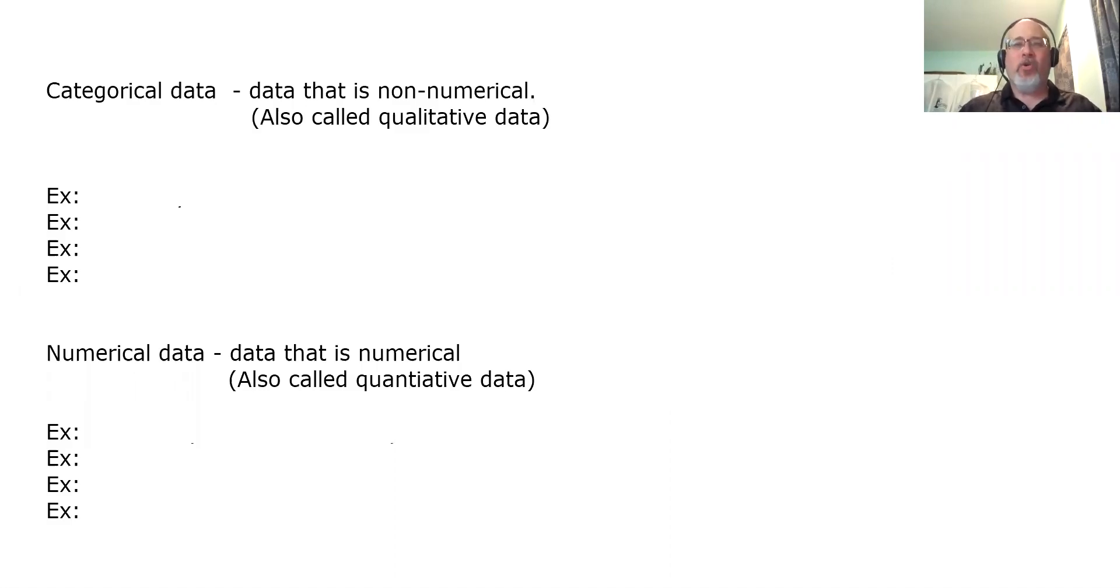The first type is called Categorical Data. Categorical data is simply data that is non-numerical. This is also called Qualitative Data. Because when you have data that's non-numerical, then you're measuring the quality, a quality that something possesses. For example, I could ask you, what is your favorite restaurant?